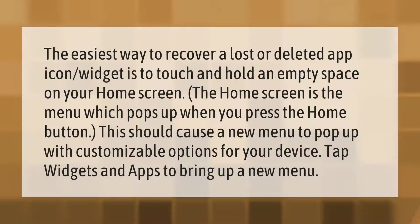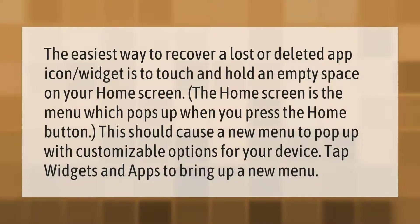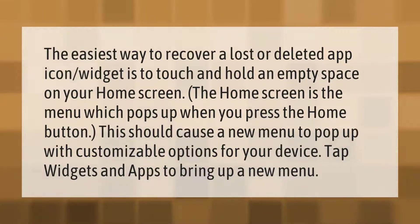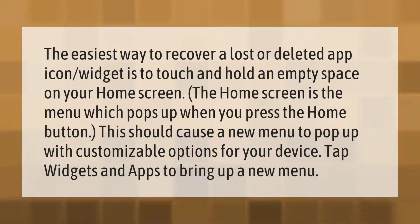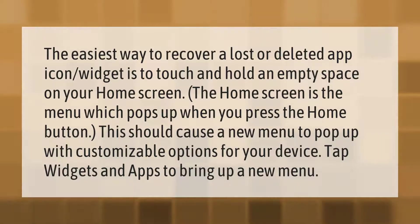The easiest way to recover a lost or deleted app icon or widget is to touch and hold an empty space on your home screen. The home screen is the menu which pops up when you press the home button. This should cause a new menu to pop up with customizable options for your device. Tap Widgets and Apps to bring up a new menu.